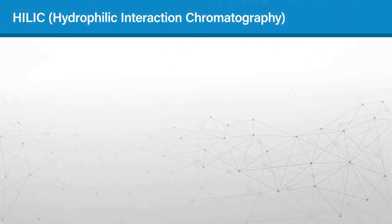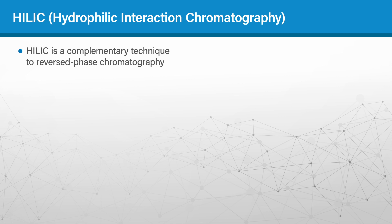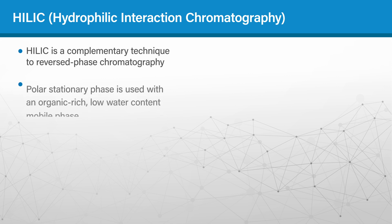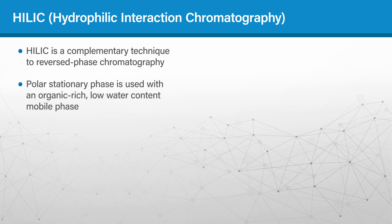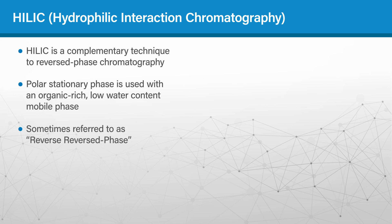HILIC, or hydrophilic interaction chromatography, is a complementary technique to reversed phase chromatography, which most separation scientists are quite familiar with. With HILIC, a polar stationary phase is used with an organic-rich, low water content mobile phase. The HILIC stationary phase and the strong elution solvents are both polar and opposite to what's used for reverse phase separations, which is why HILIC is sometimes referred to as reverse reverse phase chromatography.